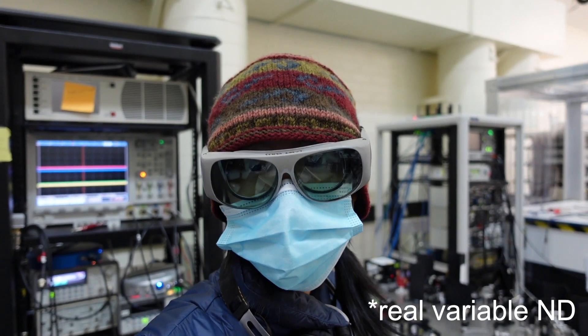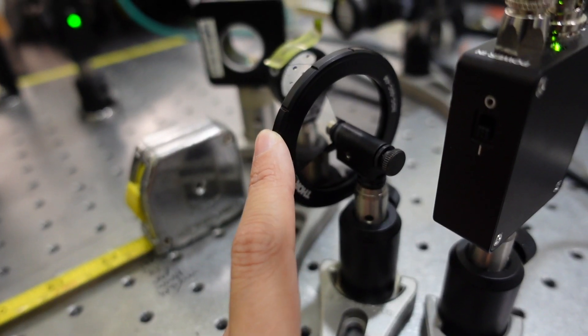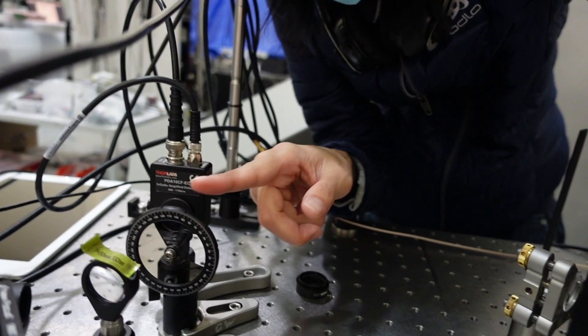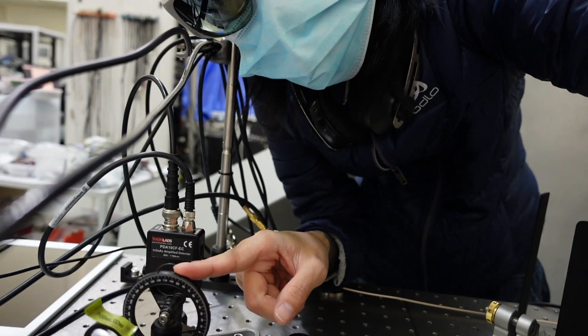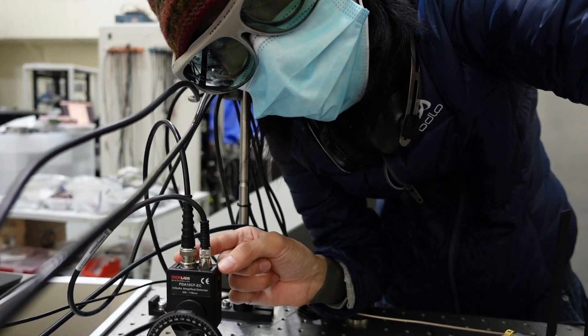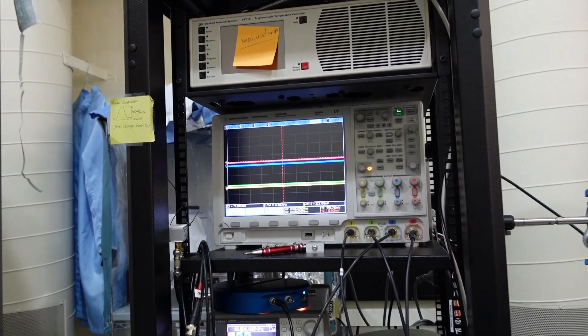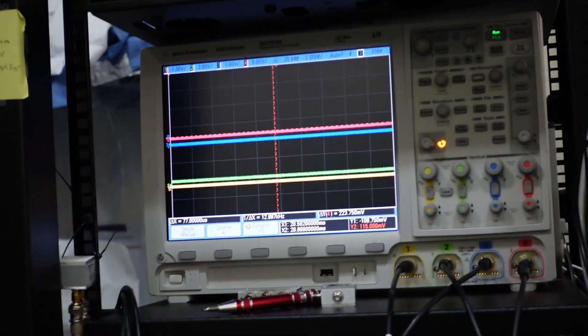Let me show you what a variable ND filter looks like. You see this little guy here with a wheel. This is a photodiode, and this variable ND filter is there to manipulate the amount of light going into this guy because this little photodiode can only take so much. And if you look at the trace on the scope which represents the amount of light hitting this diode...